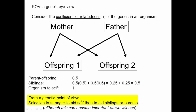From a genetic point of view, if we're thinking about natural selection favoring the reproduction of certain alleles, selection is going to be stronger to aid an organism's self compared to aiding siblings or parents. Because for those individuals, there's only a 50% chance that the allele will be in them. A mutation that causes a benefit to parents or siblings is only having a 50% probability of assisting other copies of itself in those individuals, versus if it provides a benefit to itself, there's a 100% chance that the gene is in that individual. So selection for this individual is stronger than selection for these other individuals from a genetic point of view.